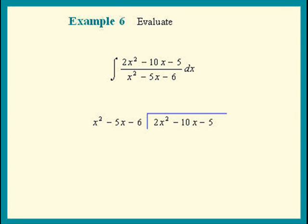So you take 2x squared minus 10x minus 5, and divide it by x squared minus 5x minus 6. What do we put on top? A 2, because we have to match the 2x squared.